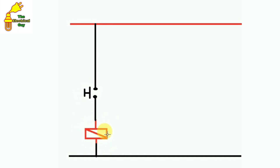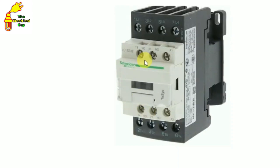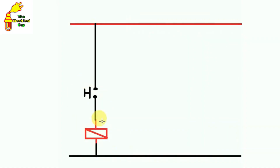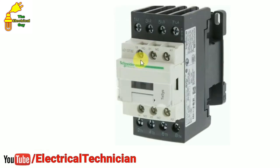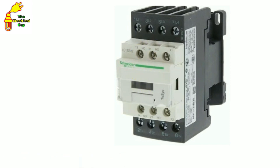For this we use the auxiliary contact of this contactor. In this contactor there are two auxiliary contacts — NO and NC. The question is which auxiliary contact we should use so that this circuit can hold the contactor on. We will use the NO contact, and I am going to tell you the reason why.